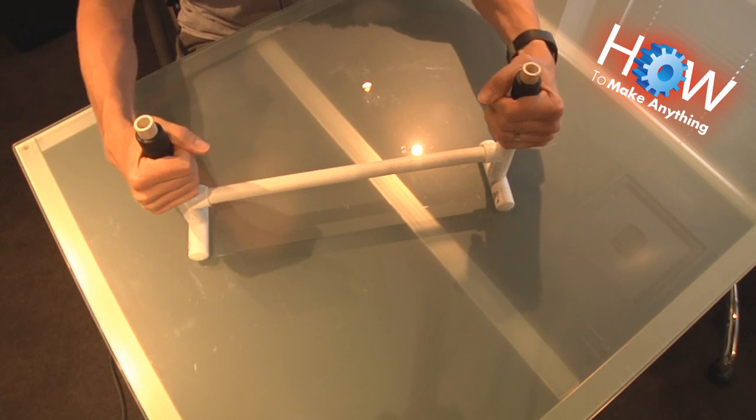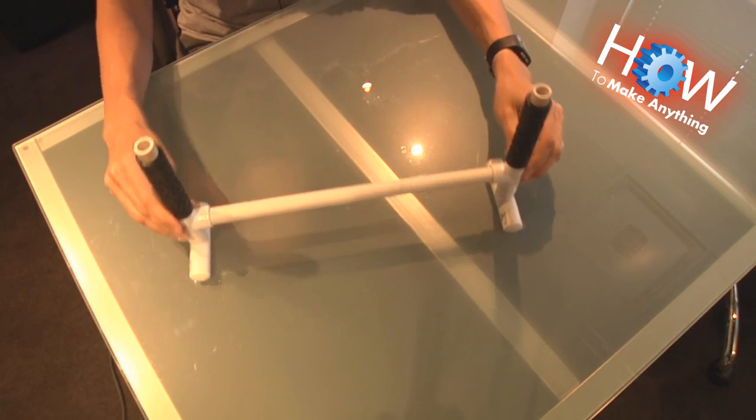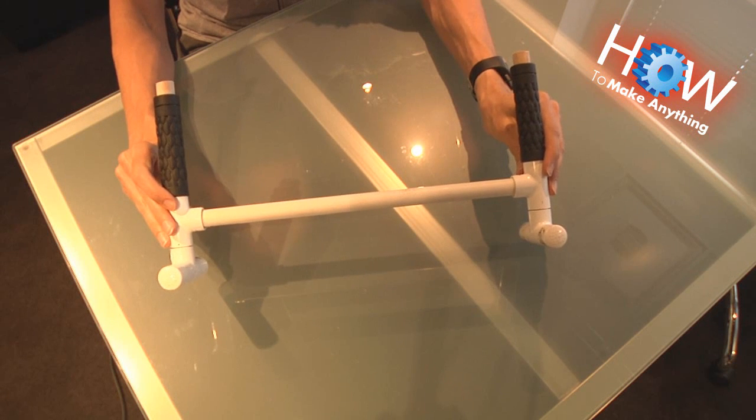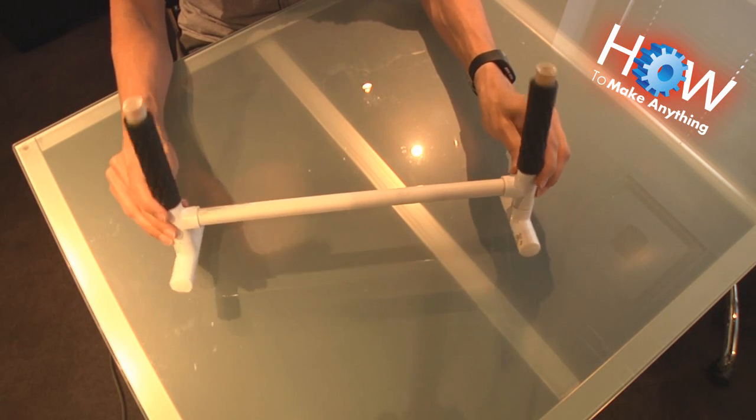The handle grips cost about $7. They're the most expensive thing in this build, unless you don't have the camera mount, which we'll talk about in a second.